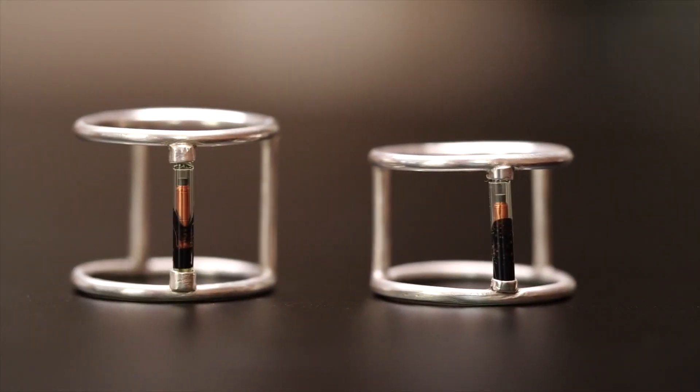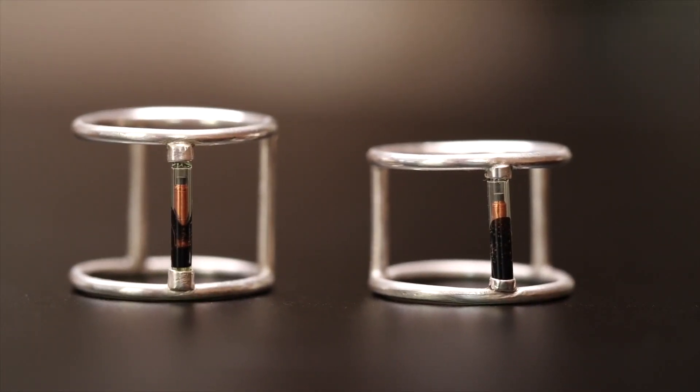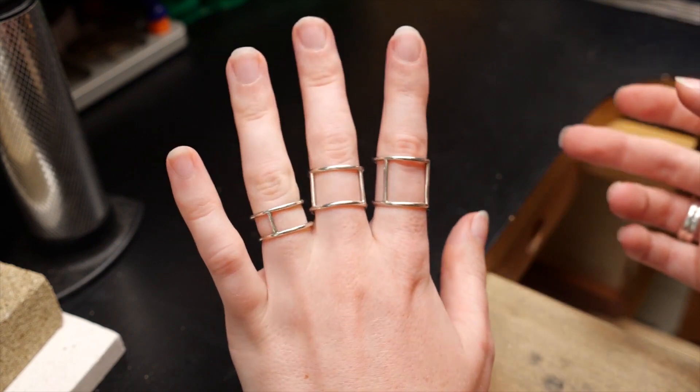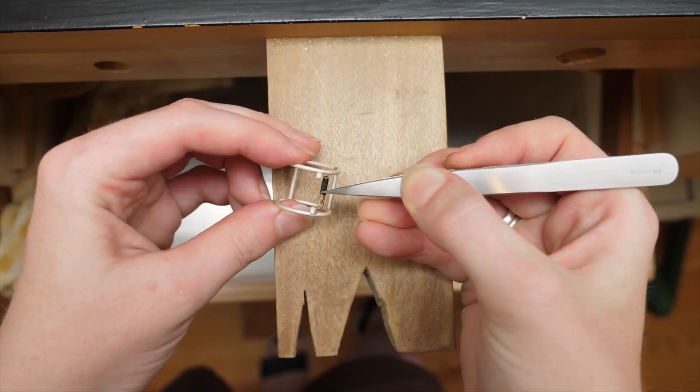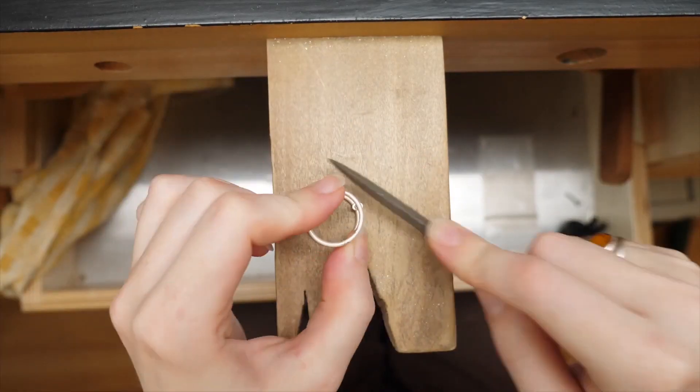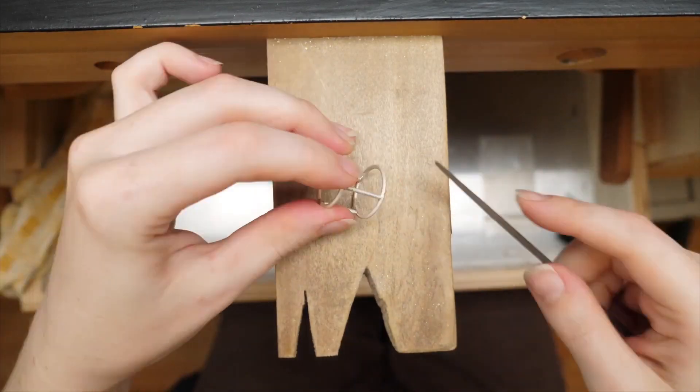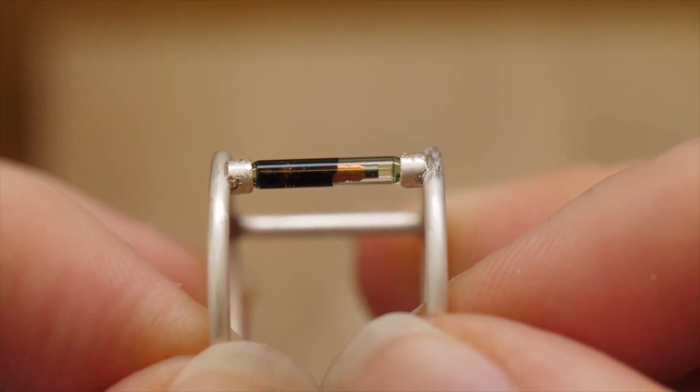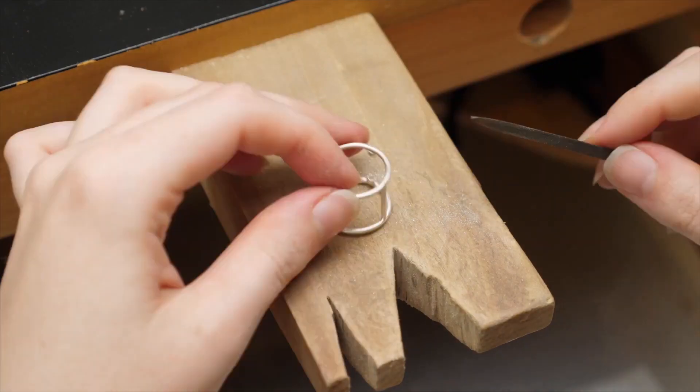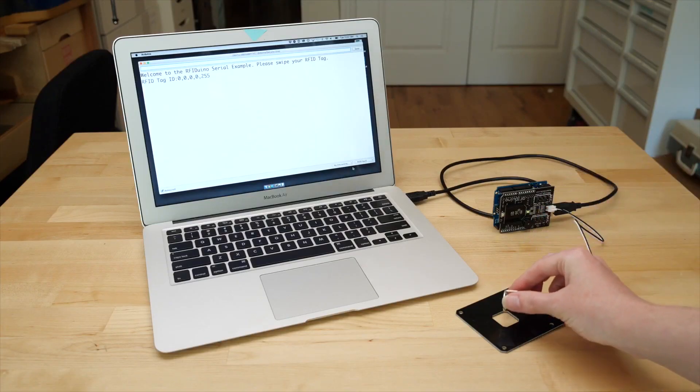Speaking of wearable tech, Becky Stern combined her electronic skills with jewelry soldering to make an elegant sterling silver RFID ring. This is the first RFID ring I've seen that doesn't embed the tag in resin, which results in a minimal design that looks great and showcases the technology nicely.